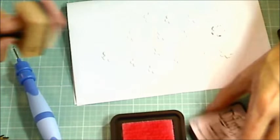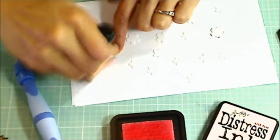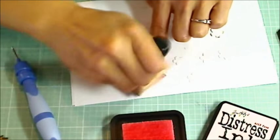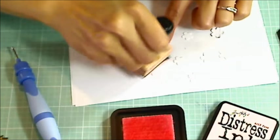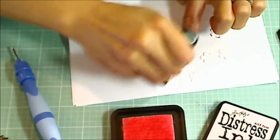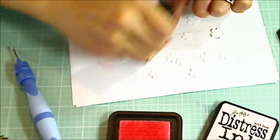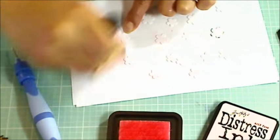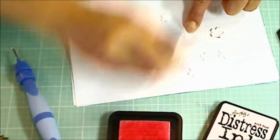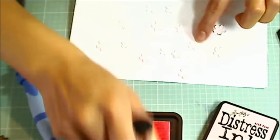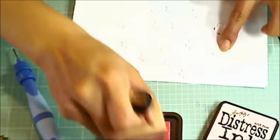I die cut out a whole bunch of those little cherry blossoms. And I'm coloring them up with some distress ink in spun sugar just to give them a pale pink kind of hue. And I did that intentionally because I didn't want a flat cardstock color. I wanted the variance in color that you get from ink blending.